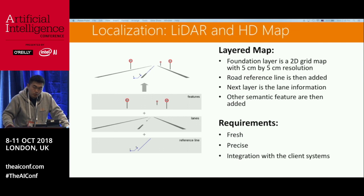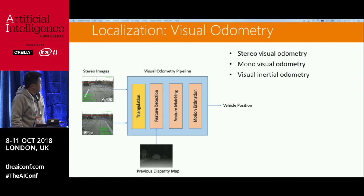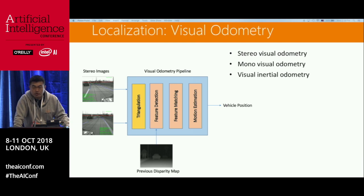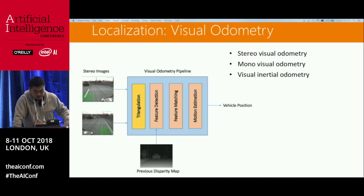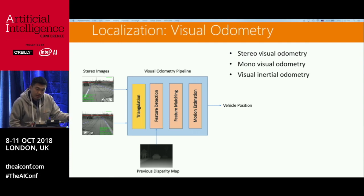Take Google Maps as an example — it refreshes itself every six months. But for an HD map, it's weekly. That's why it's so expensive. A more affordable way to do autonomous driving localization is to use visual odometry: use two cameras, capture data from the environment, and combine that data to infer how much distance you have traveled. It's a very affordable approach, but a very challenging technology.